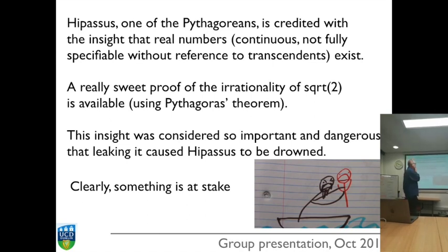For this insight, or perhaps for leaking the insight, the stories vary, he was drowned. Hippasus has been thrown overboard there. So they took their math very seriously back there, and there's something in the structure of this question that was worth killing someone over. I want to keep that in mind because we're going to encounter the structure of this question again and again.